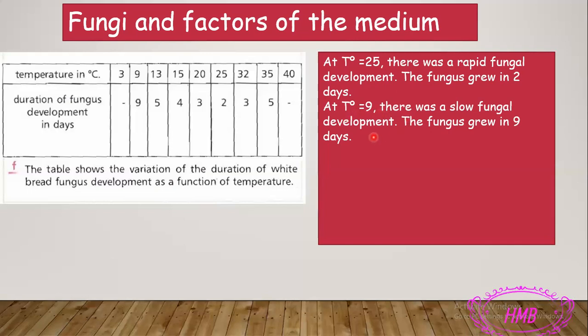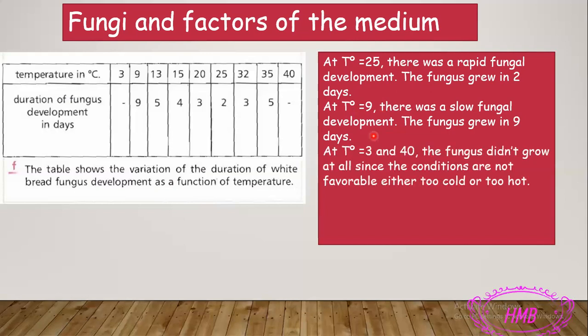We conclude that at 25°C there was rapid fungal development — it grew in only two days. At 9°C there was slow fungal development, taking nine days. At both 3°C and 40°C — very cold and very hot temperatures — the fungus did not grow at all because the conditions are not favorable. The fungus does not grow in too cold or too hot temperatures. Therefore, the favorable temperature for the growth of the fungus is 25°C, the optimal temperature — not too cold, not too hot.